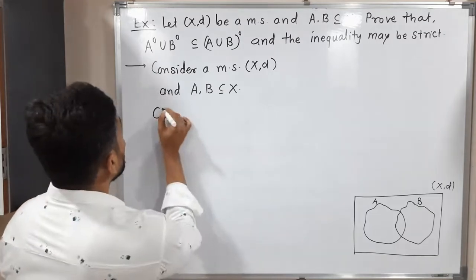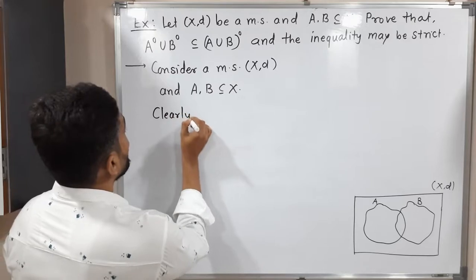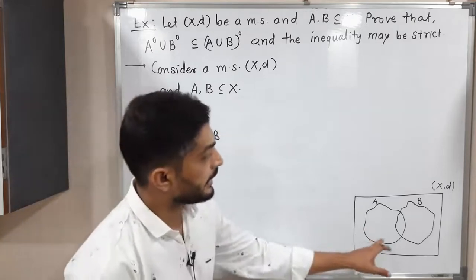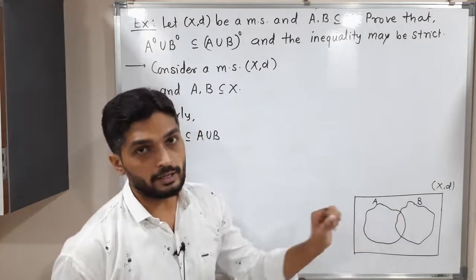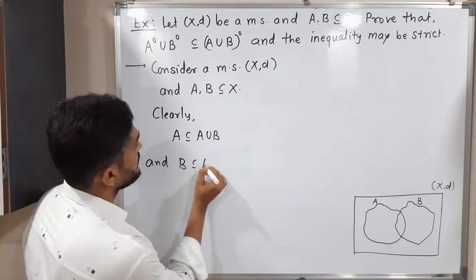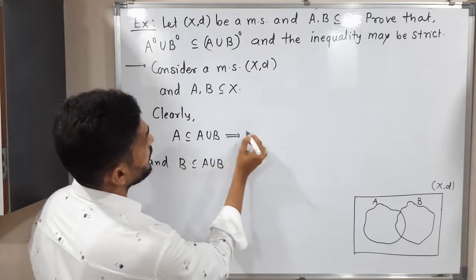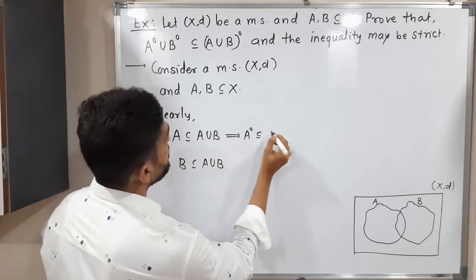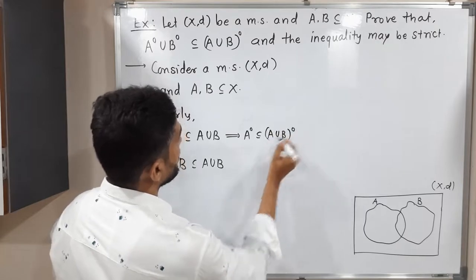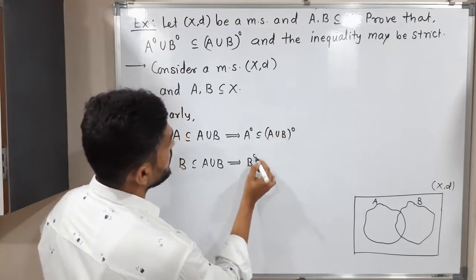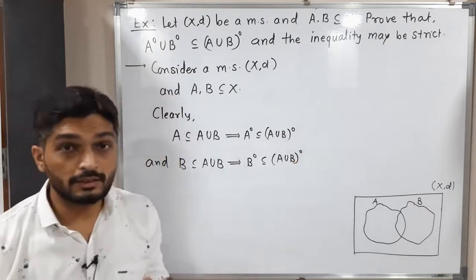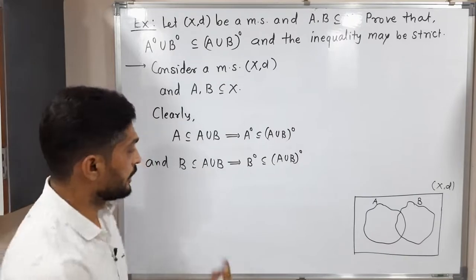Clearly, A is a subset of A union B, and B is also a subset of A union B — that is obvious. So if A is a subset of A union B, the same relation will be maintained in their interiors: the interior of A is a subset of the interior of A union B. Similarly, the interior of B is a subset of the interior of A union B.